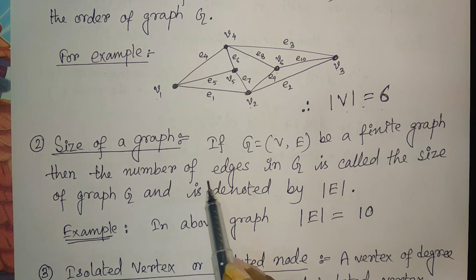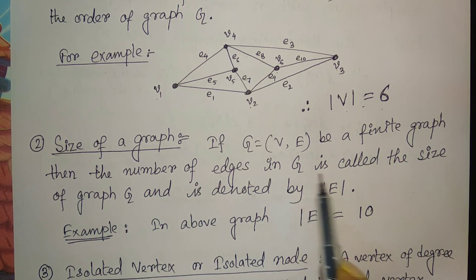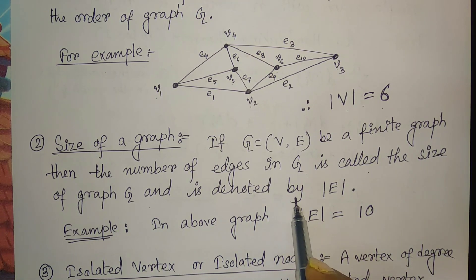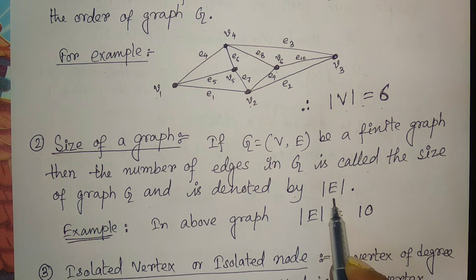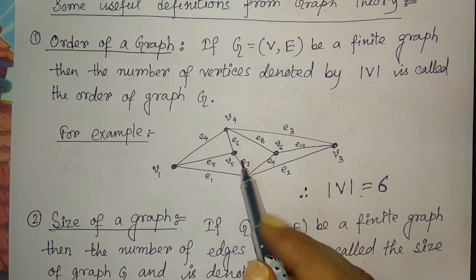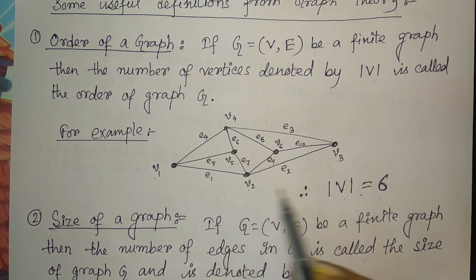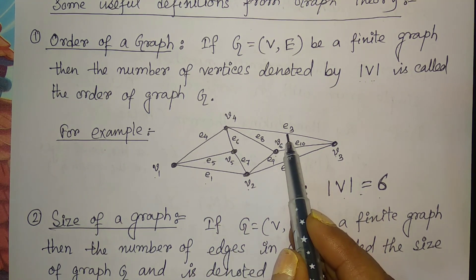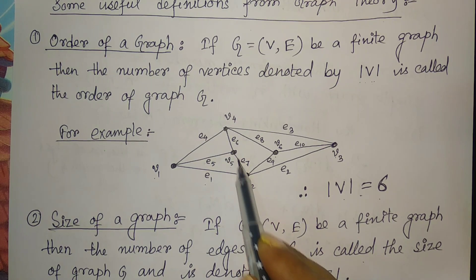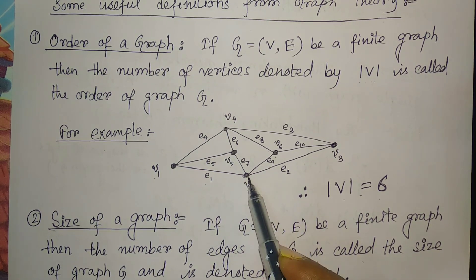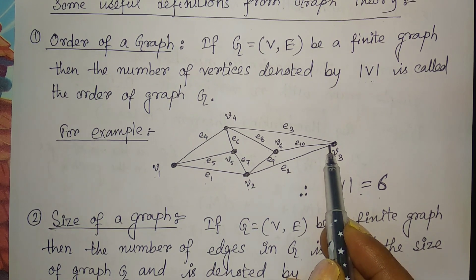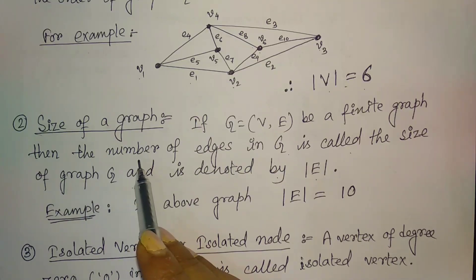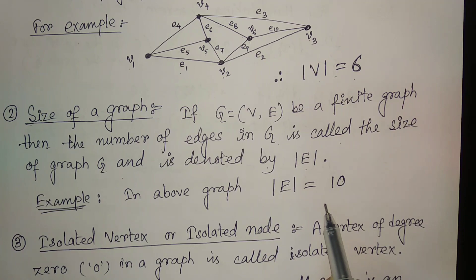Next is the size of a graph. If g be a finite graph, then the number of edges in g is called the size of the graph g, and is denoted by the cardinality of e. If we consider the same example, there are total 10 edges: e1, e2, e3, e4, e5, e6, e7, e8, e9, and e10. So the size of the graph is 10.